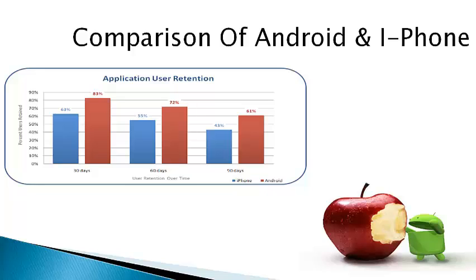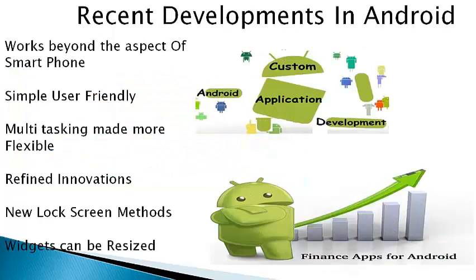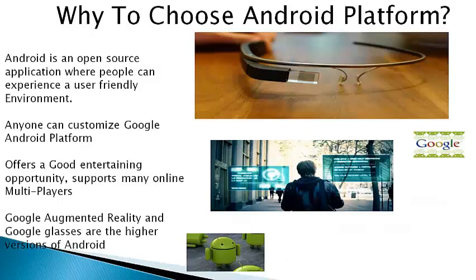In the early 30 days, Android growth was lower and iPhone was higher, but as the days grew on, Android became more prominent. Moving on to recent developments in Android: it works beyond just smartphones, it is a very simple and user-friendly platform, multitasking can be made more flexible, refined innovations are done in Android phones, and new lock screen methods have been introduced.